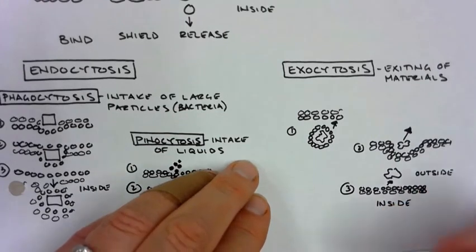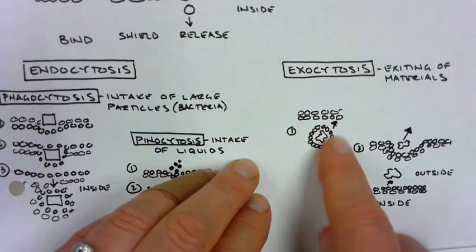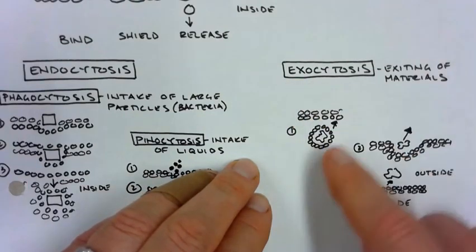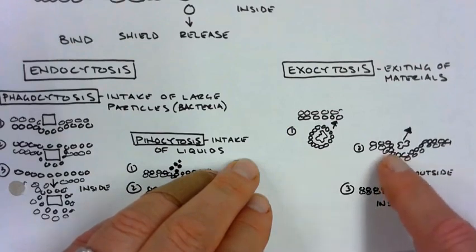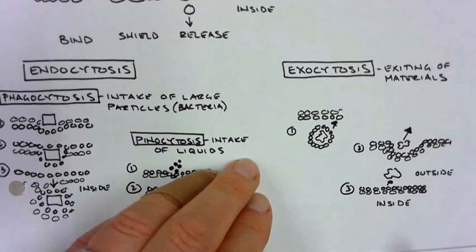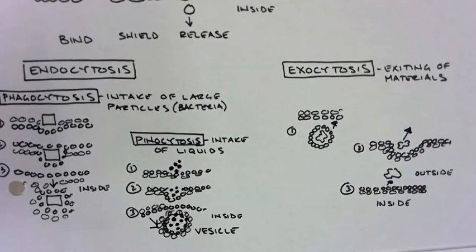Exocytosis, on the other hand, is exiting. So this is inside the cell. It's wrapped in a vesicle. Maybe it's been delivered by the Golgi apparatus. Exo, think of exit. It's going to meet up with the cell membrane, and it's basically spit outside of the cell, and it's gotten rid of. So that's exocytosis. Endocytosis and exocytosis.